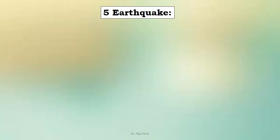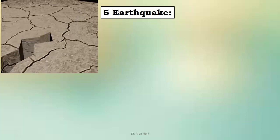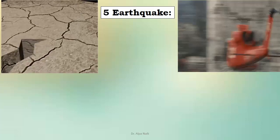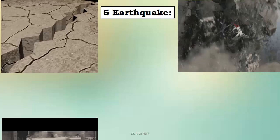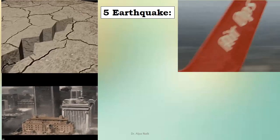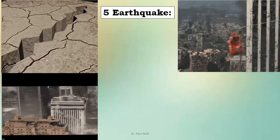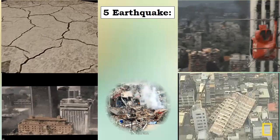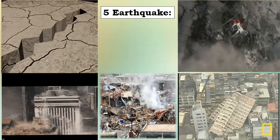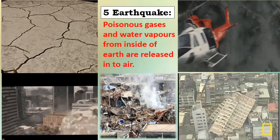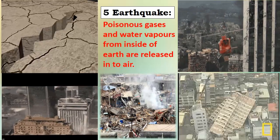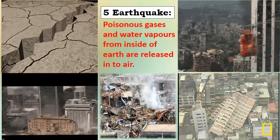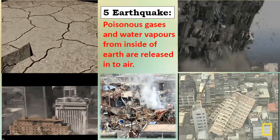Another reason is earthquakes. The sudden vibration of an earthquake causes huge human loss, loss of life whether plant or animal, and large-scale destruction. Because of this, poisonous gases and water vapors from inside the earth are released into the air.